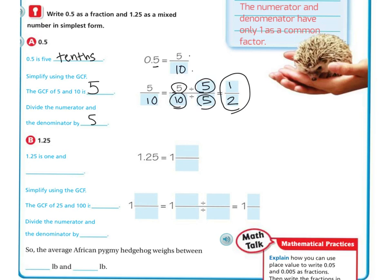Now let's look at 1 in 25 hundredths. So again, it's 25 hundredths. So this is 1 in 25 hundredths. So if we're using greatest common factor, greatest common factor of 25 and 100 is 25.